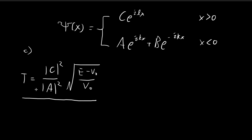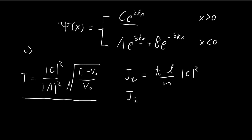The first problem in part C is that we need to show that this is indeed the case. The problem gives us a hint to check out problem 2.19, which gives us the probability current of such a waveform. Let J_t represent the probability current of the wave traveling beyond the barrier — the transmitted wave. According to the result from problem 2.19, the probability current of this transmitted wave is equal to ℏL divided by m times |c|². And for the incident probability current — the wave arriving at the barrier — we get a corresponding value.